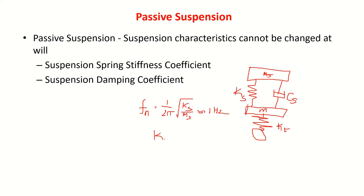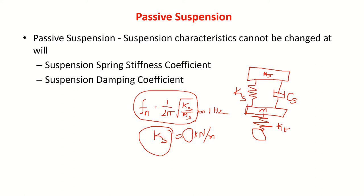We try to fix this natural frequency at approximately 1 Hz, and from that we arrive at the KS value and design a mechanical spring accordingly — so many kilo-Newtons per meter. But in reality, this spring is designed for the laden (loaded) condition. In the unladen condition, mass varies, frequency changes, resonance frequency changes, and comfort levels change. These are the problems we face with a fixed value of KS.